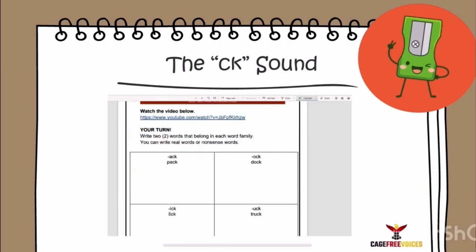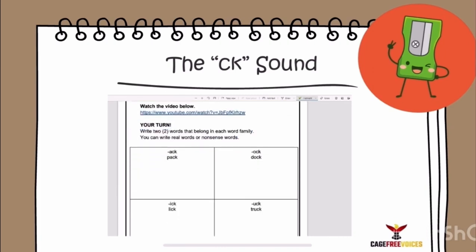I want you, on your own, when you open up this assignment, to click on the video. When you go to the attachment in your course, click on the video and watch it. After you finish watching the video, come back and write two words that belong to each word family.